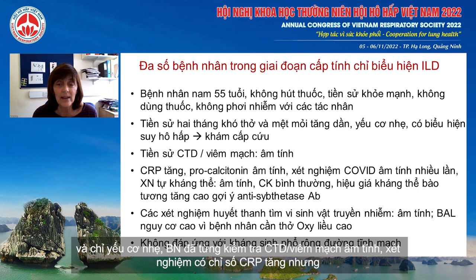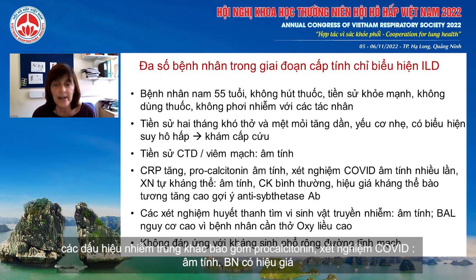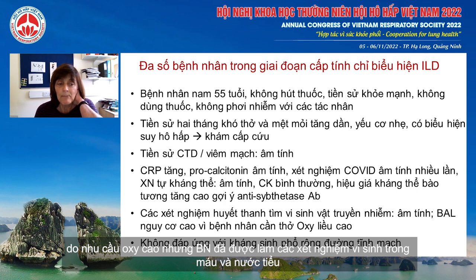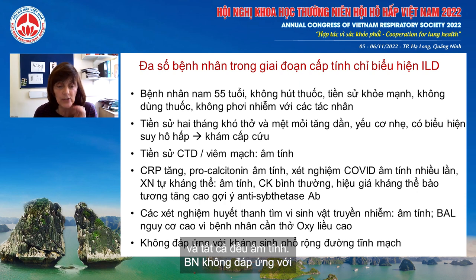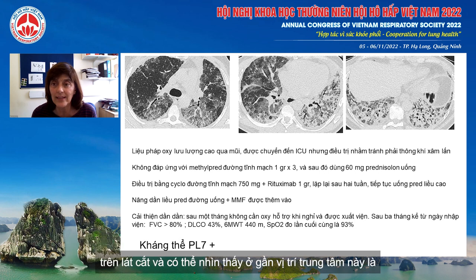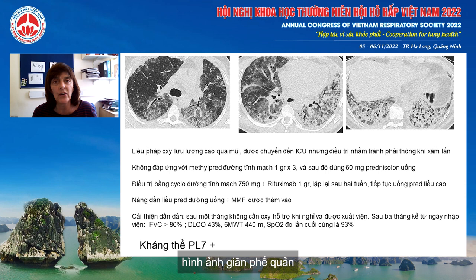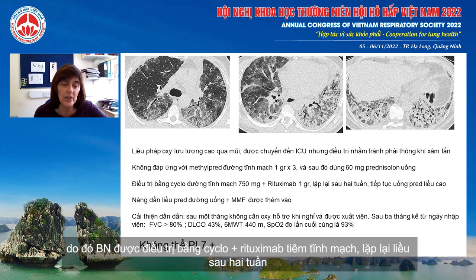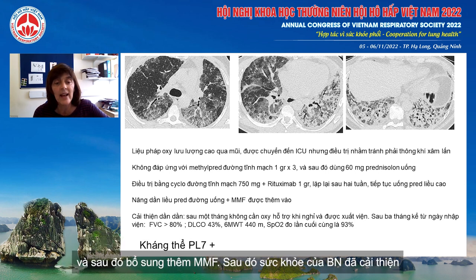He had a negative history and examination for connective tissue disease. He had raised CRP, but infectious markers including procalcitonin were negative. He had high-titre cytoplasmic antibody, and he could not have a BAL because of high oxygen requirements, but had extended serological and urinary tests for infectious organisms — all negative — and did not respond to broad-spectrum antibiotics. His CT showed widespread patchy ground glass bordering on consolidation at the bases, with some bronchocentricity. He was treated with IV methylprednisolone, did not respond, and was therefore treated with IV cyclophosphamide/rituximab repeated after two weeks, then mycophenolate was introduced, and he made a gradual and progressive improvement.